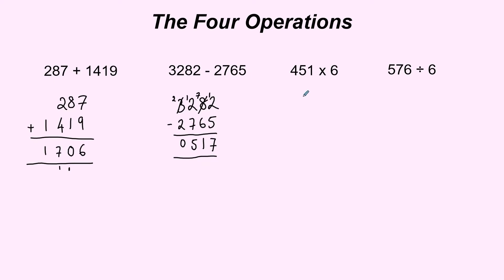On to multiplying and we set it out pretty much the same way. Again line up the multiplication on the right hand side and we're going to start from the right hand side with the ones. So 6 times 1 is 6.